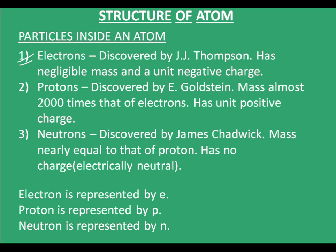Electrons were discovered by JJ Thompson. Electrons have negligible mass and a unit negative charge on them. Protons were discovered by E. Goldstein. Protons have mass almost 2000 times that of electrons and have a unit positive charge, that is opposite to that of electrons.